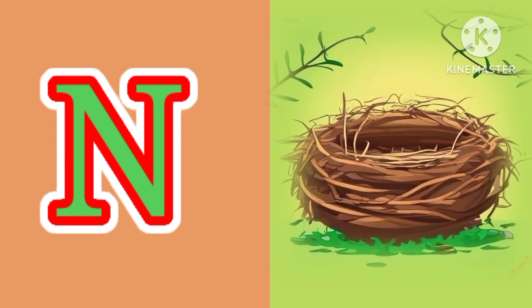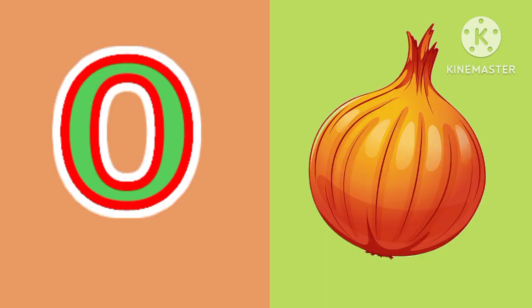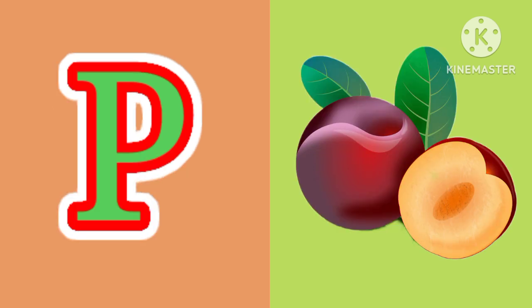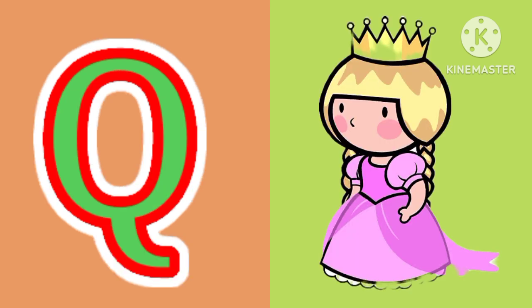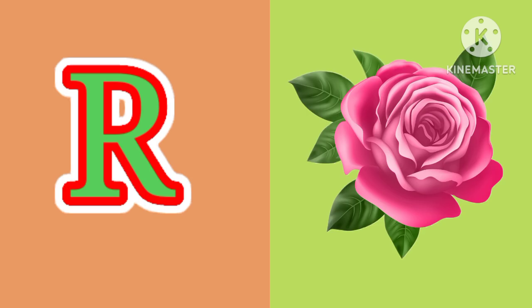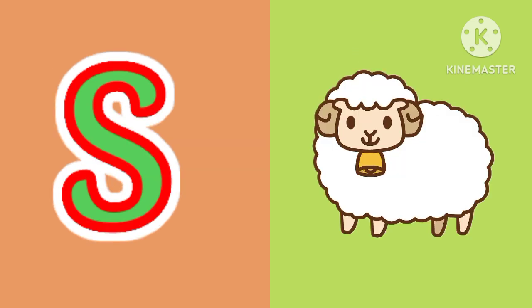N for nest, O for onion, P for plum, Q for queen, R for rose, S for ship.